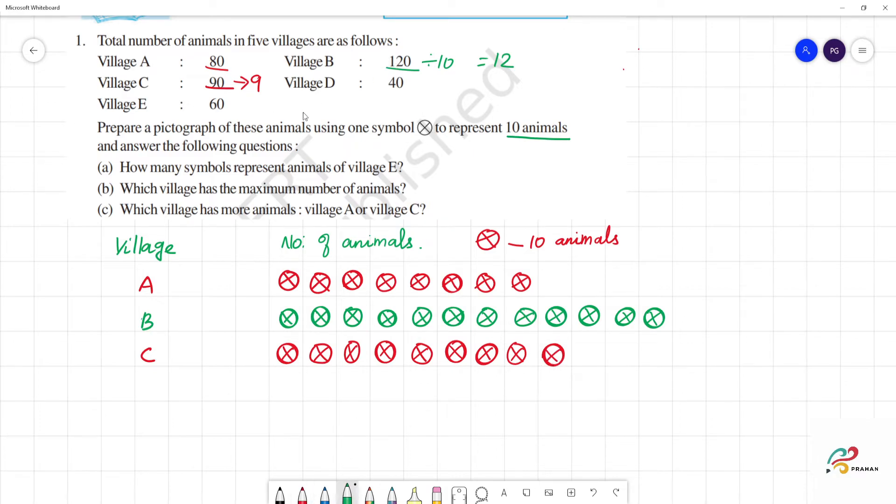Next after village C is village D. Village D has how many animals? 40 animals. 40 animals means how many pictures? 4. So, 1, 2, 3, 4. Totally 4 pictures.